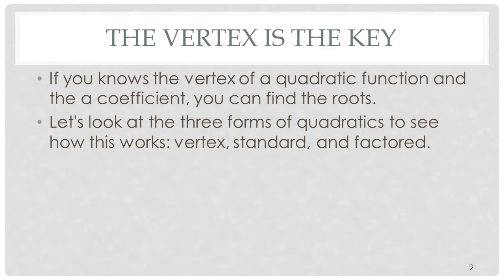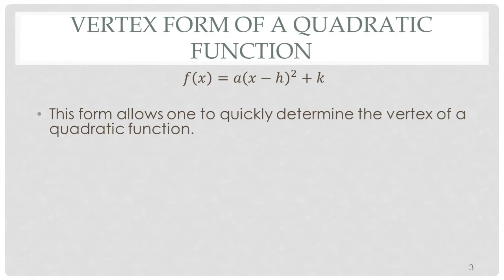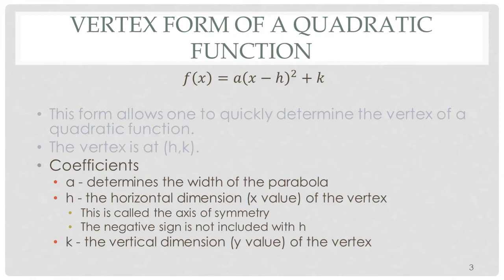Let's see how this works by looking at the three forms of quadratics. They're called the vertex form, the standard form, and the factored form. We'll start with the vertex form and that looks like f of x equals a times the quantity x minus h squared plus k. The nice thing about this form is it gives you the vertex, which is going to be at h comma k. The coefficient a determines the width of the parabola, h is the horizontal dimension or the x value of the vertex. This is called the axis of symmetry. Notice the negative sign is not included with the h. And k is the vertical dimension or the y value of the vertex.